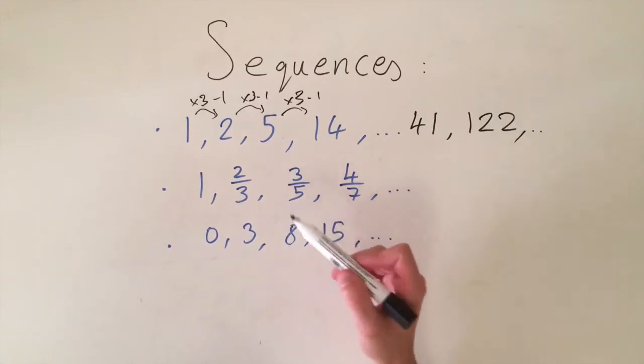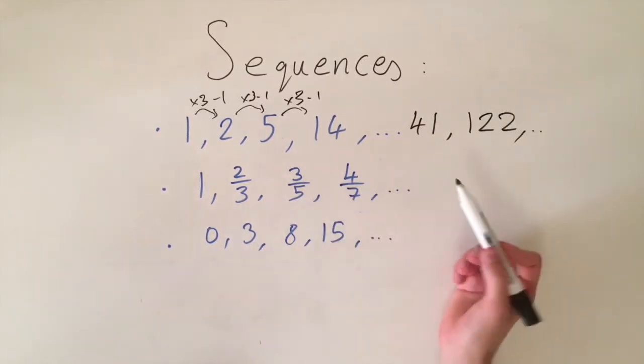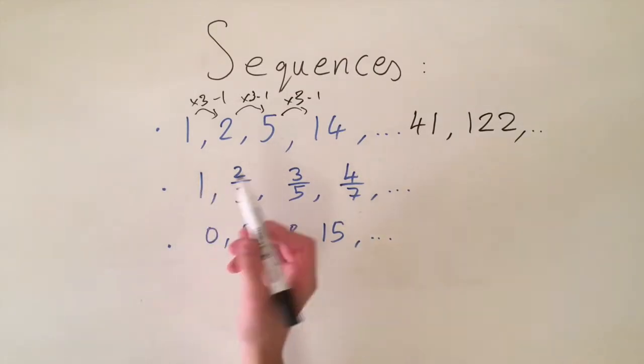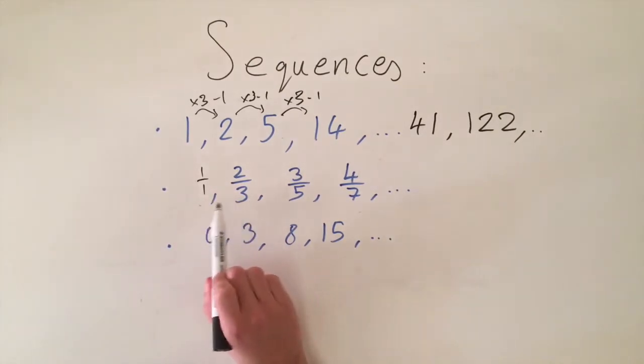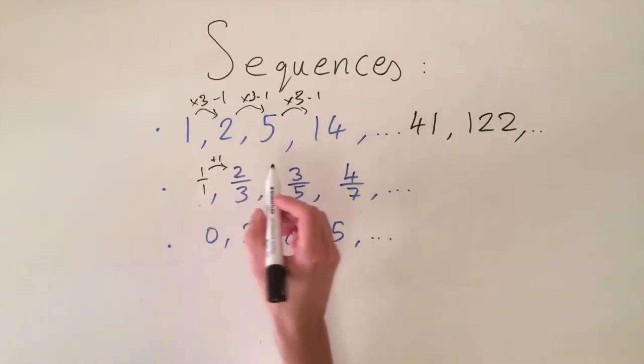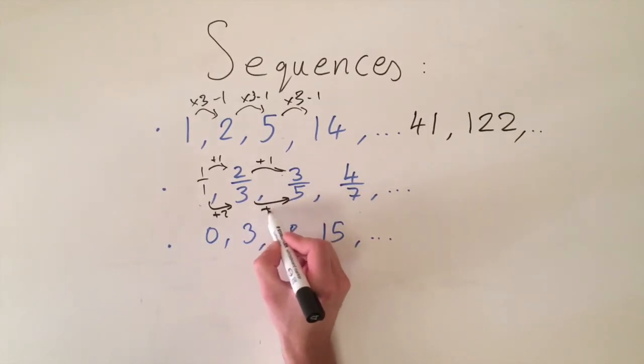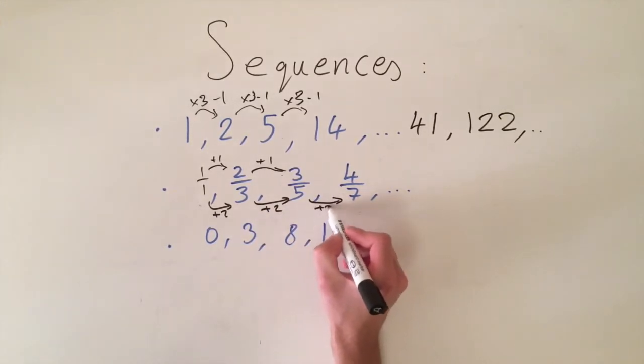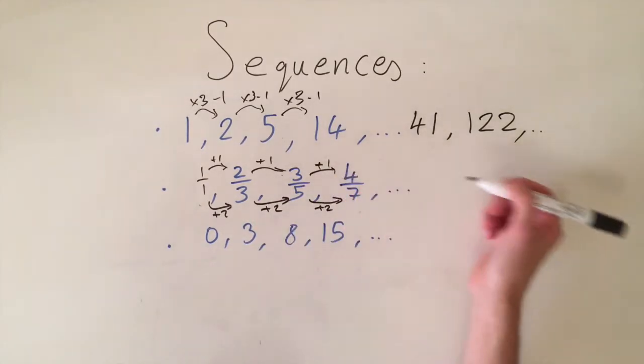And now for the middle one here this one's a bit more difficult because we can't really express this mathematically but we can still find the pattern so we can think of 1 as just being a fraction of 1 over 1 and then if we look at the numerators and the denominators separately we are adding 1 to the numerator at each term and the denominator we're adding 2. So we've just got the odd numbers on the denominators and this is the pattern of the sequence.